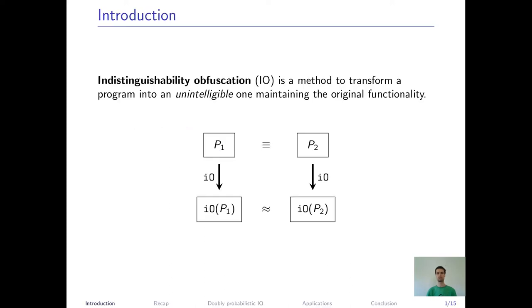Let's first start with what is indistinguishability obfuscation. Indistinguishability obfuscation is a method to transform programs into unintelligible ones while maintaining their functionality. It can be seen as a compiler which takes a program, compiles it into a program that computes the exactly same function but is unreadable or unintelligible in a certain sense.